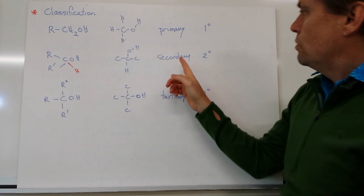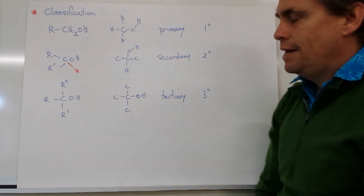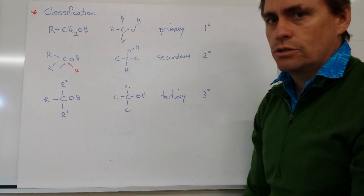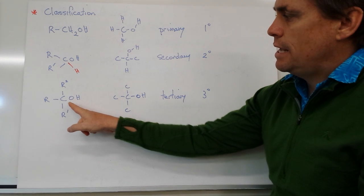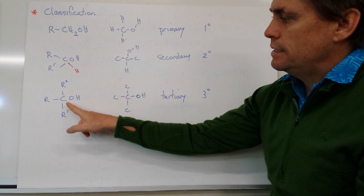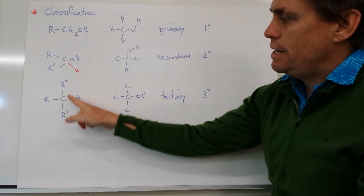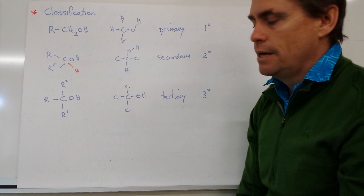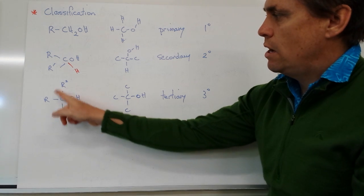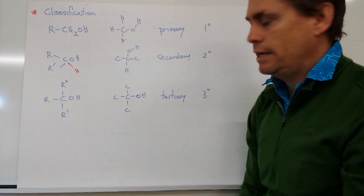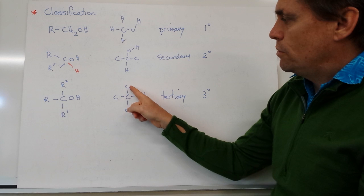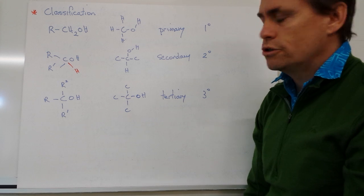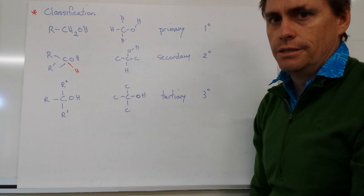Of course we can get what's called a tertiary alcohol. The carbon that has our hydroxy or alcohol group on it doesn't contain any hydrogens. Instead it has three different carbon chains, or they could all be the same, but they can't be hydrogens because if they were hydrogens we would actually have our primary alcohol again. In this case we've got our carbon bonded to three different types of carbons, and we get what's called a tertiary alcohol, and we denote that with a three and our superscripted zero.